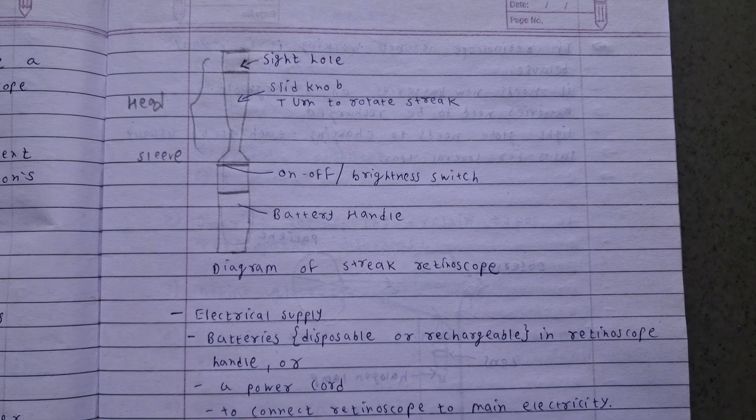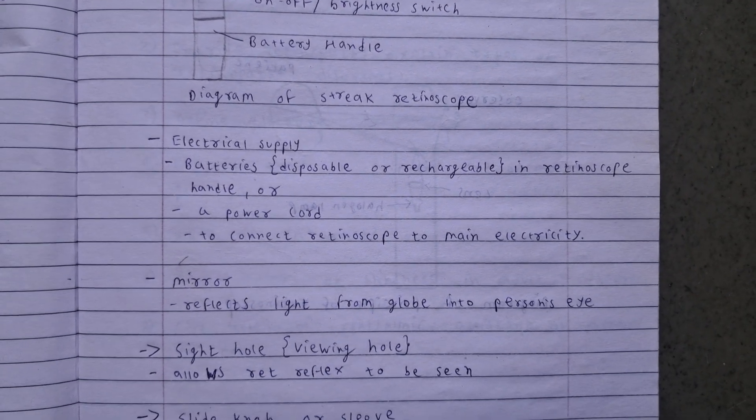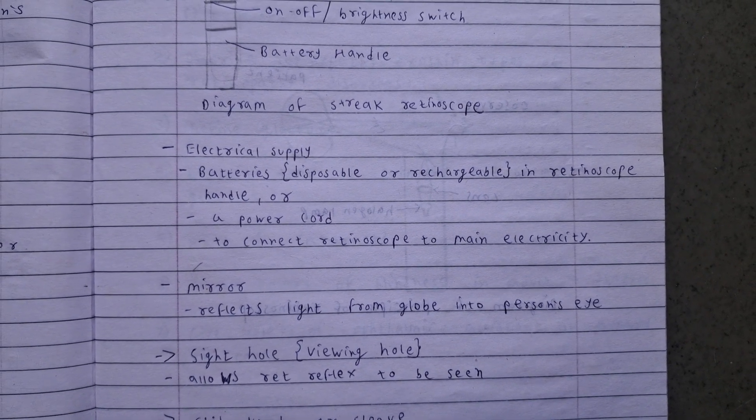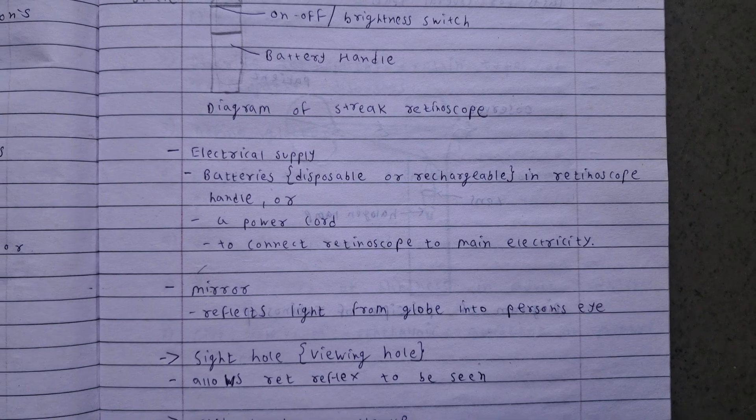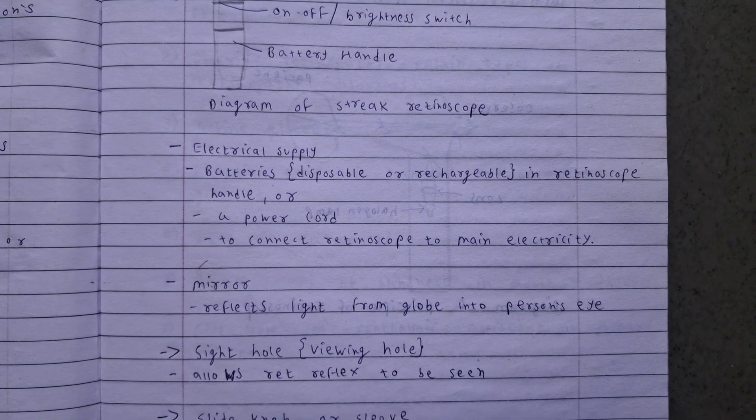On and off switch, brightness switch, battery handle provides electrical supply. Batteries, disposable or rechargeable, are in the retinoscope handle. A power cord connects retinoscope to main electricity.